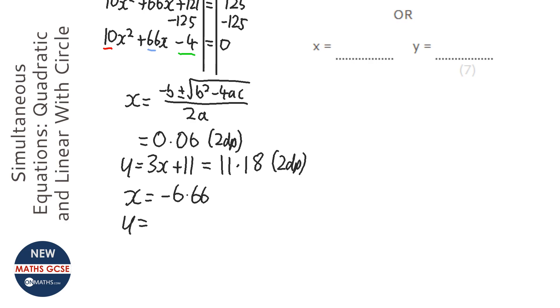And again, I'm going to find out the y by timesing it by 3 and adding 11. So I'm going to times that by 3 whilst it's still in my calculator and I've still got all the accuracy. Plus 11. And it gives me minus 8.98.